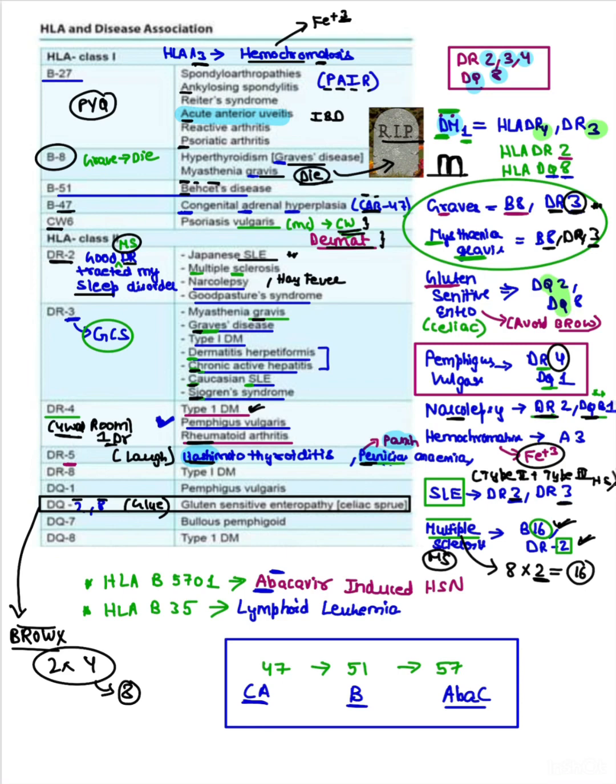Now coming to some other remaining: B57, that is your abacavir-induced hypersensitivity. Then B35, that is your lymphoid leukemia. We have 47, 51, 57. 47 was congenital adrenal hyperplasia, the mnemonic was CAB-47. Then 51 was B51, B at holy temple, that is 51 rupees, that is Behcet's. Then we'll do opposite, ABC: that is your abacavir-induced hypersensitivity, that is your 57.